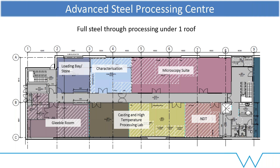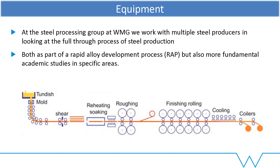We can then go through to characterisation, NDT and microscopy. The idea is that samples can be made and characterised without ever leaving a five-metre footprint. We try and do the whole process under one roof, and I think that's the best way for me to explain the equipment.